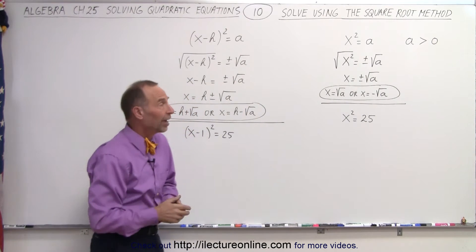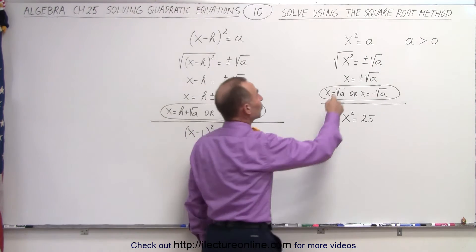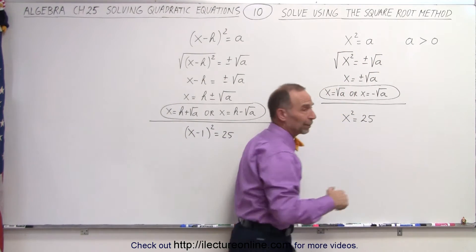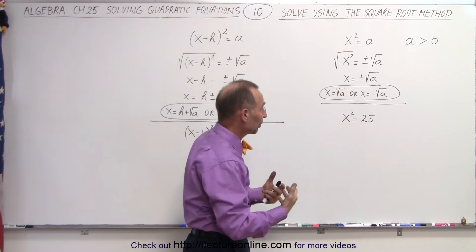You simply take the square root of both sides. So in general, let's say we have x² = a, and now we're going to only look at the case where a is greater than zero, so we have real solutions.